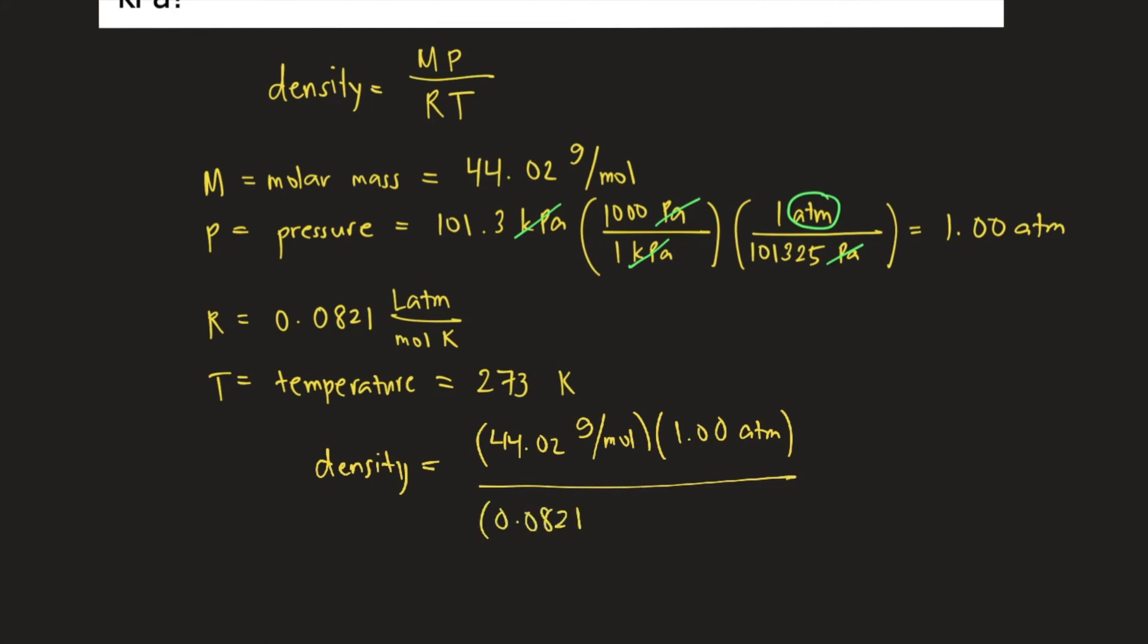0.0821 litre atmosphere per mole kelvin times temperature is 273 kelvin. Let's see how the units will cancel. Atm would cancel, kelvin would cancel, and moles would cancel. So our unit for density is grams per liter.